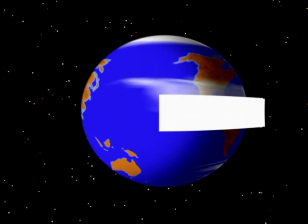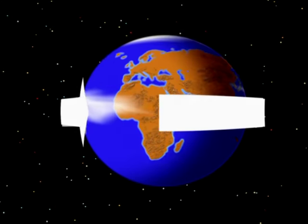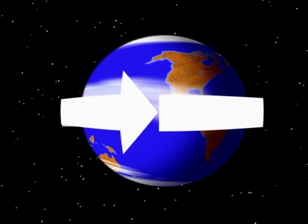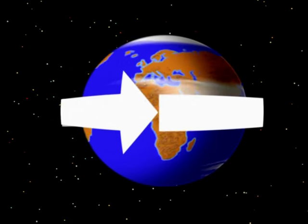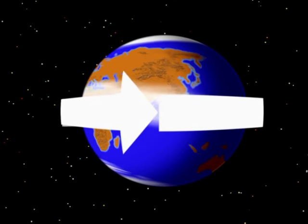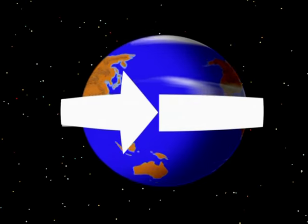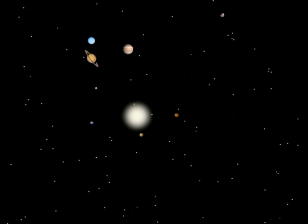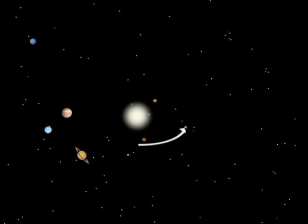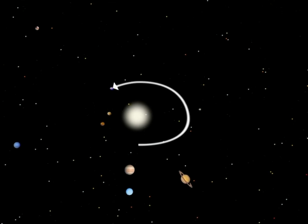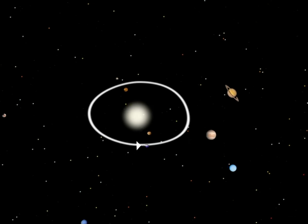The planets rotate on their own axes and around the Sun. When a planet completes a full rotation on its own axis, we call this a day. The Earth takes 24 hours to do this. When the planets complete a full circle around the Sun, we call this a year. For the Earth, this takes 365 days.